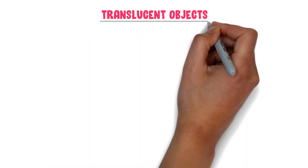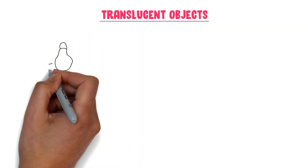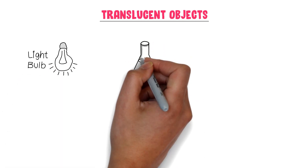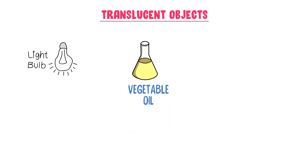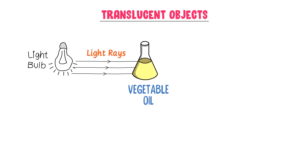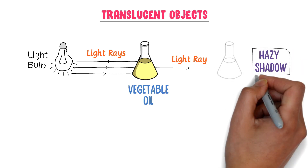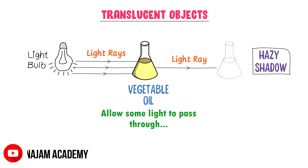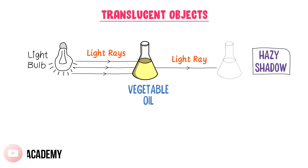Now what about translucent objects? Well, consider a luminous object like a bulb which produces light. This time, I place vegetable oil in front of the bulb. Now light rays are hitting the vegetable oil. On the opposite side, we can observe that only some rays of light pass through the vegetable oil and a hazy shadow is formed. So vegetable oil is a translucent object because it allows some light rays to pass through it. Secondly, it forms a light shadow or hazy shadow.